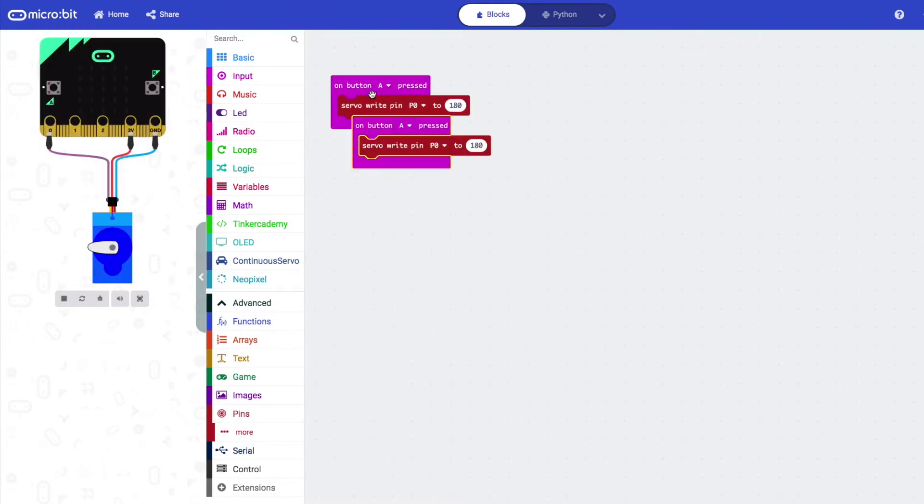Right click on the function to duplicate it. Simply switch the pin settings for button B, setting the value inside the servo write pin block to 0.